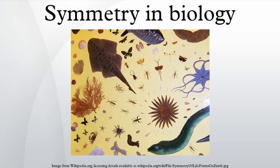Symmetry in biology is the balanced distribution of duplicate body parts or shapes. In nature and biology, symmetry is approximate. For example, plant leaves, while considered symmetrical, rarely match up exactly when folded in half. Symmetry creates a class of patterns in nature, where the near repetition of the pattern element is by reflection or rotation. The body plans of most multicellular organisms exhibit some form of symmetry, whether radial symmetry, bilateral symmetry, or spherical symmetry.